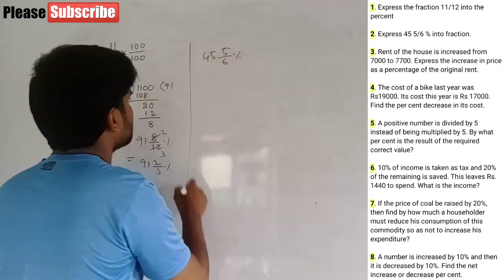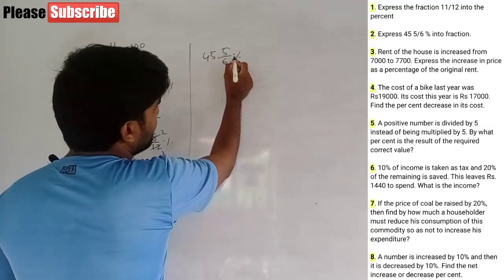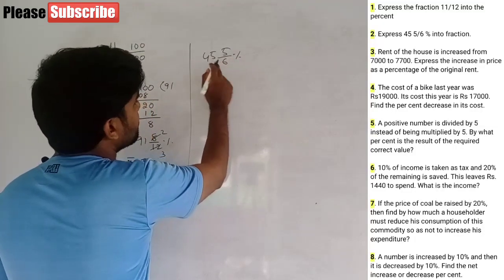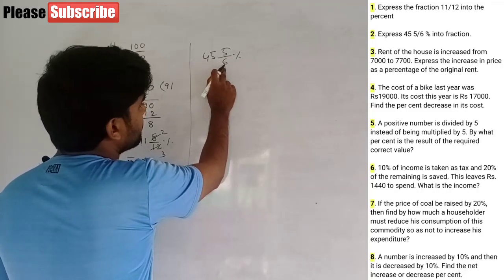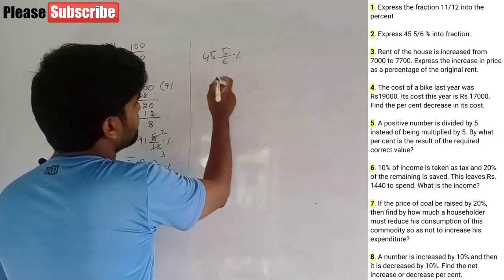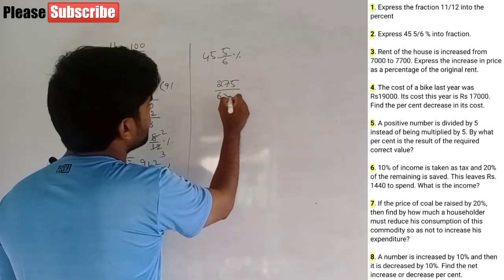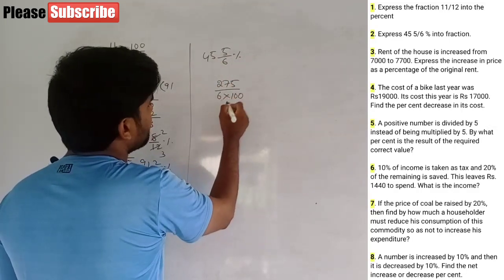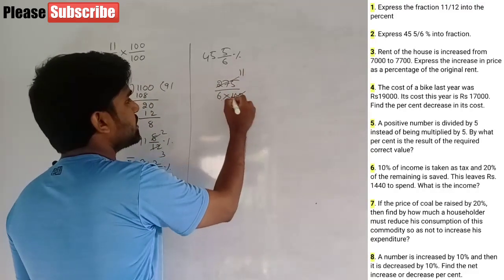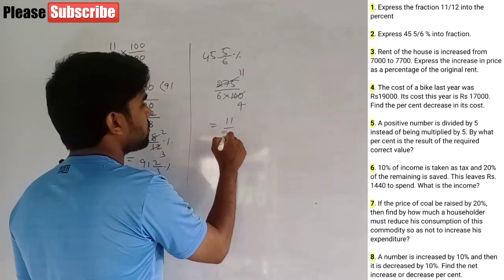Next question: express 45 and 5/6 percent into a fraction. To convert to a fraction, divide the percentage by 100. So 45 and 5/6 percent: 45 into 6 is 270, plus 5 is 275. So 275 divided by 6, then divided by 100. Cancel 25 and 4 times, giving 11 over 24 as the fraction.